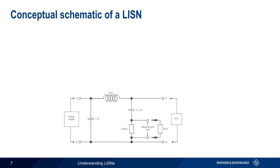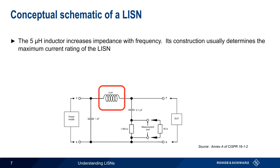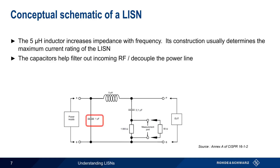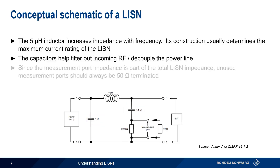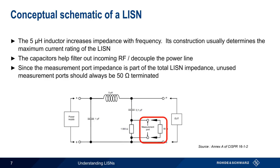Let's look at a conceptual schematic of a LISN, taken from Annex A of CISPR-16-1-2. The 5 µH inductor increases impedance with increasing frequency, and its construction usually determines the maximum current rating of a given LISN. The capacitors help to both filter any incoming RF and decouple the power line. Finally, note that since the measurement port is part of the total LISN impedance, this port should be 50 ohm terminated when not in use.